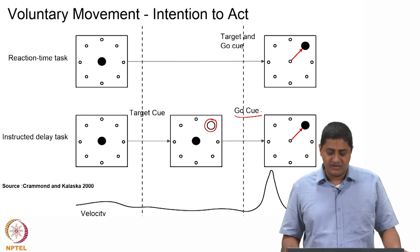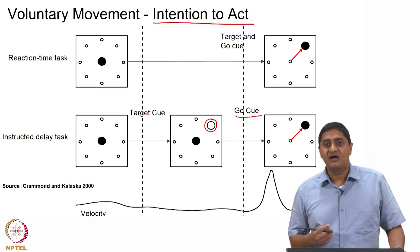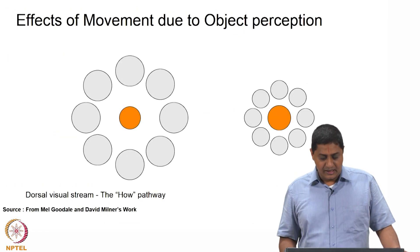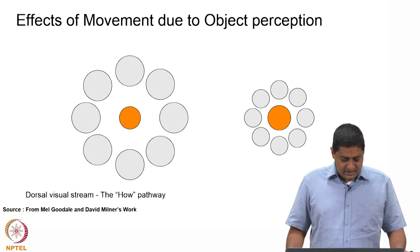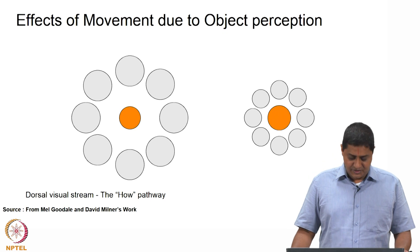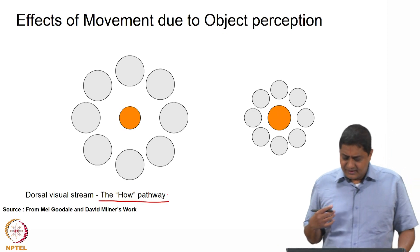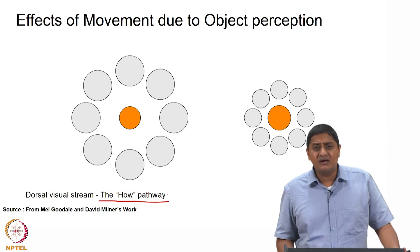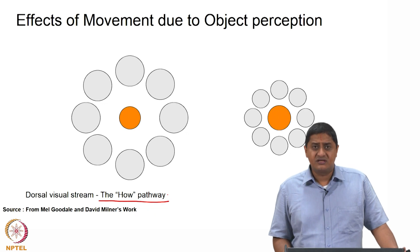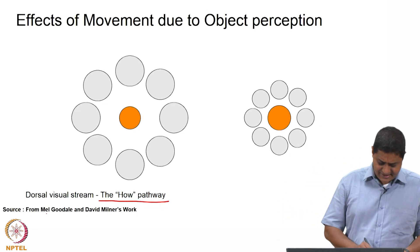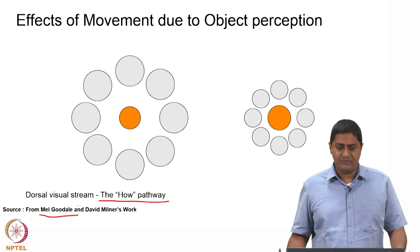This means that voluntary movement essentially encodes an intention to act and is a manifestation of a decision-making process. Also, what has been shown is that the dorsal visual stream is the 'how' pathway — it is not just about what and where the object is, but also how the action is going to happen. Some nice examples from Mel Goodale's lab are presented here.